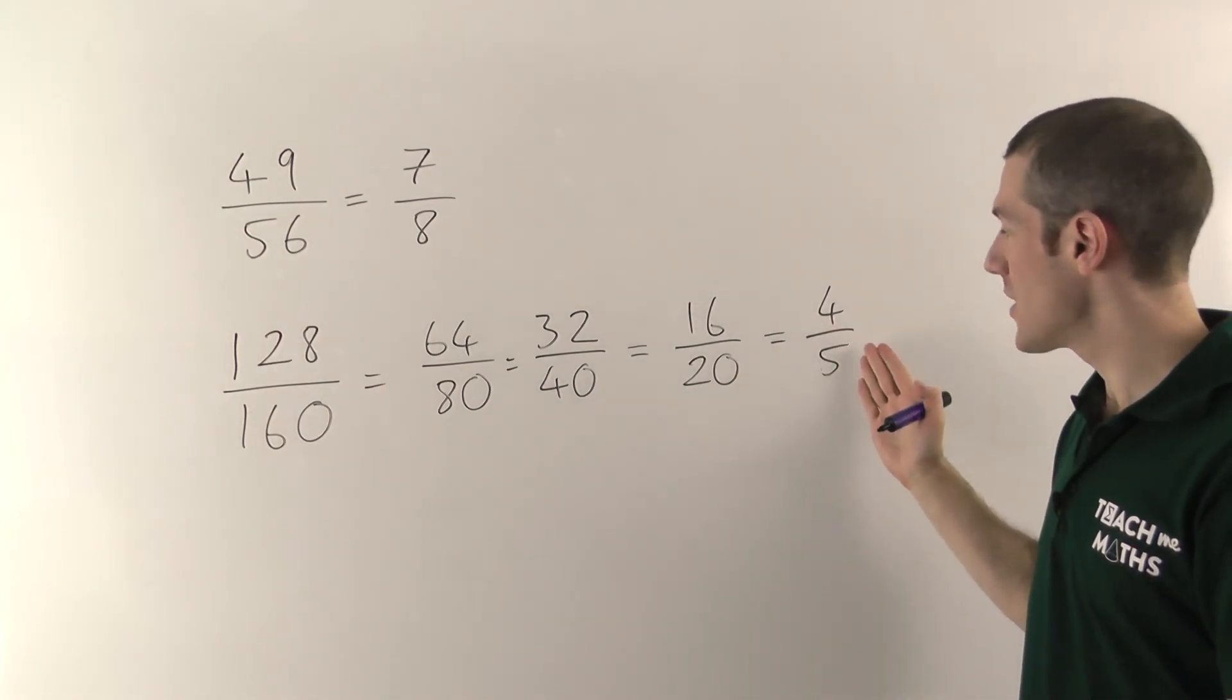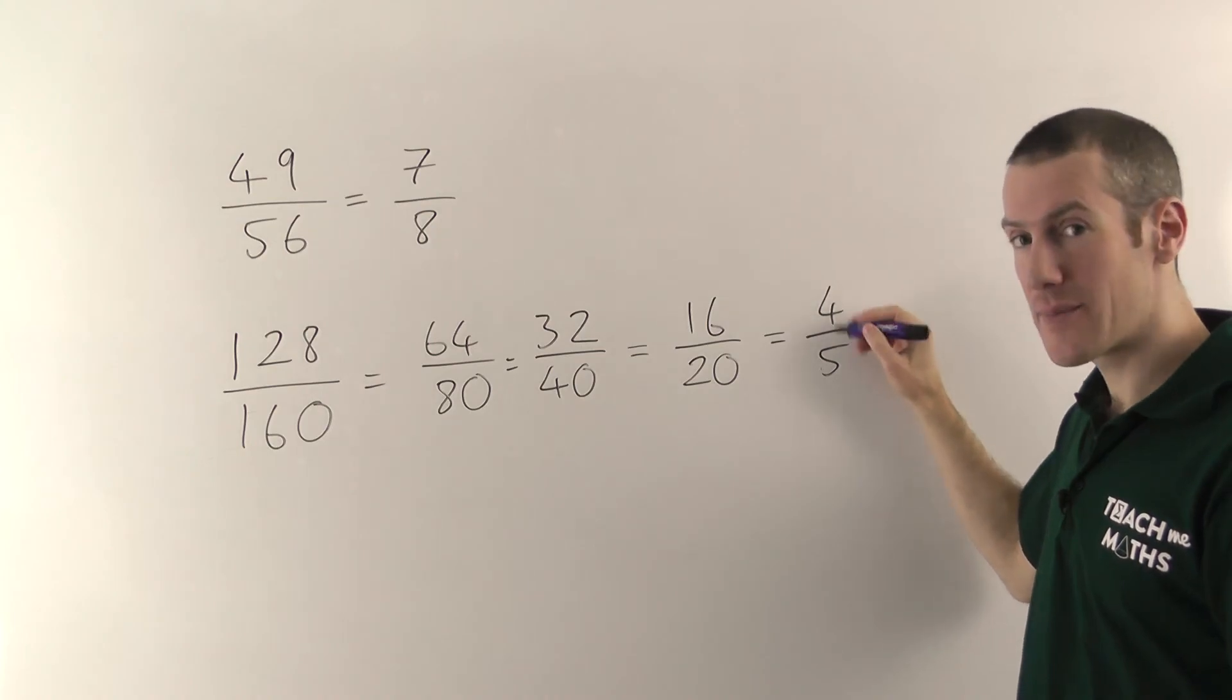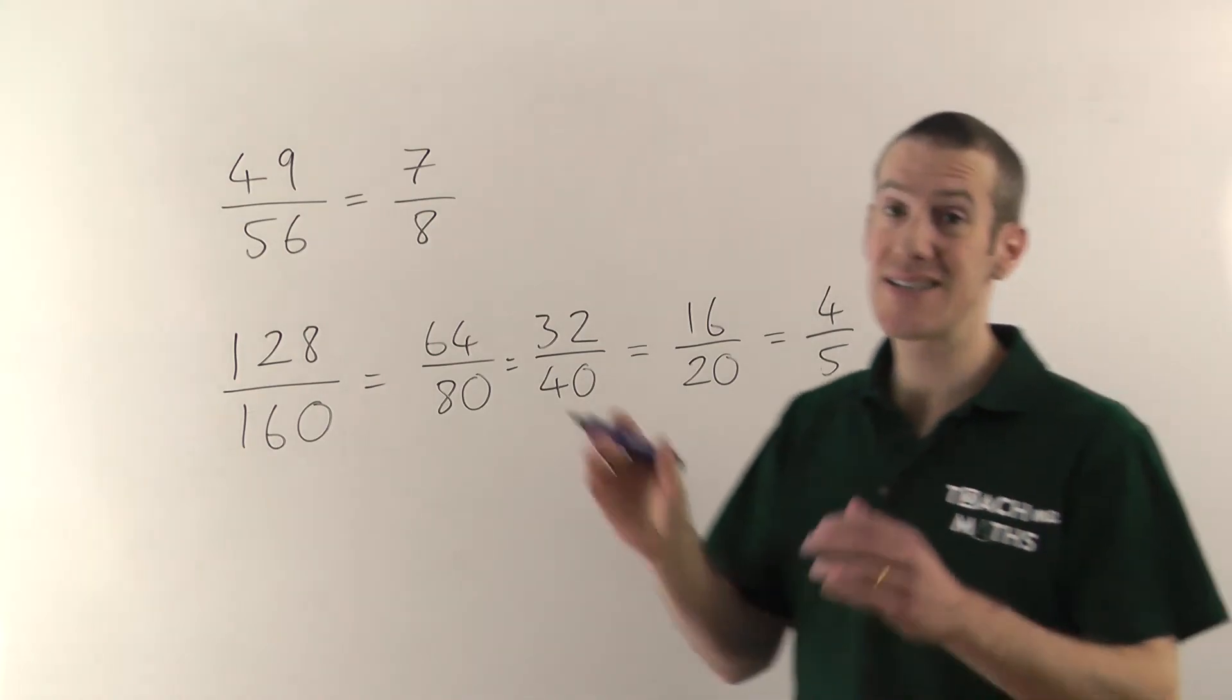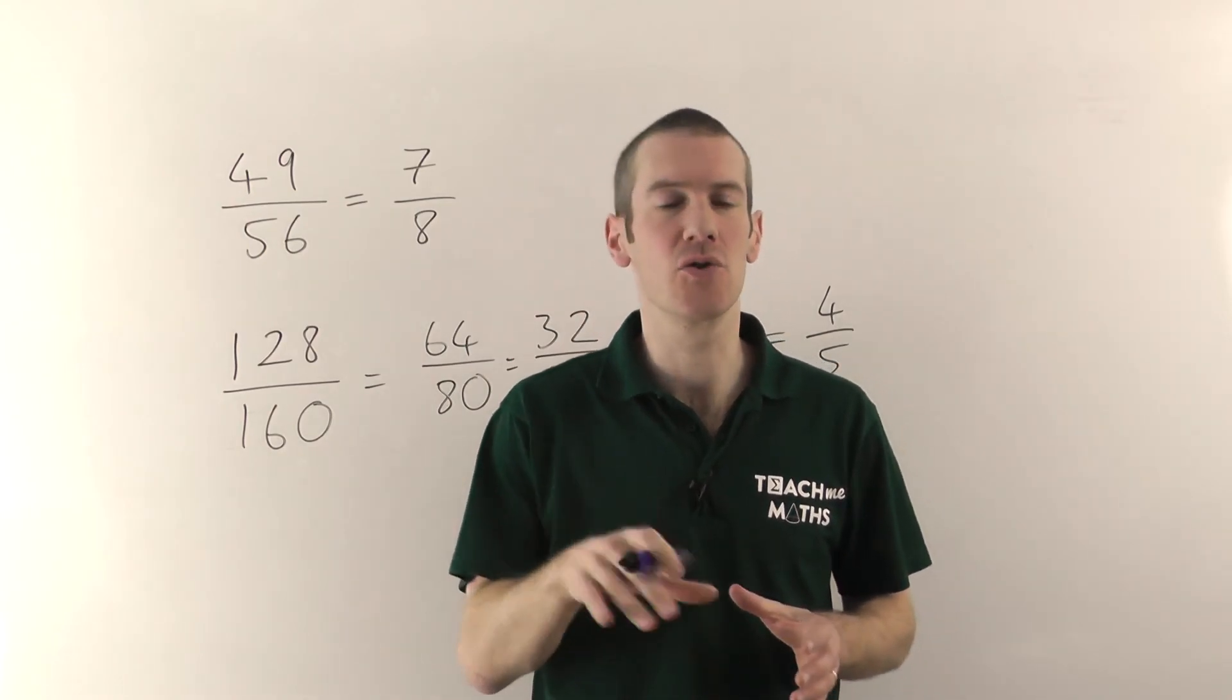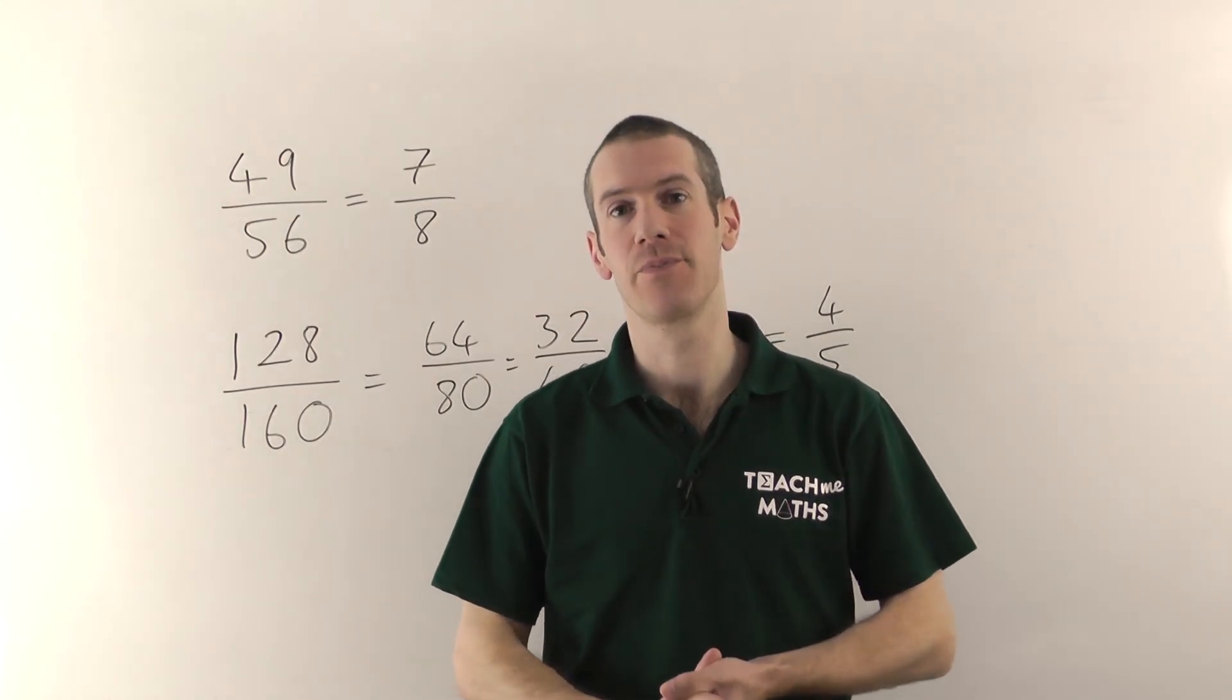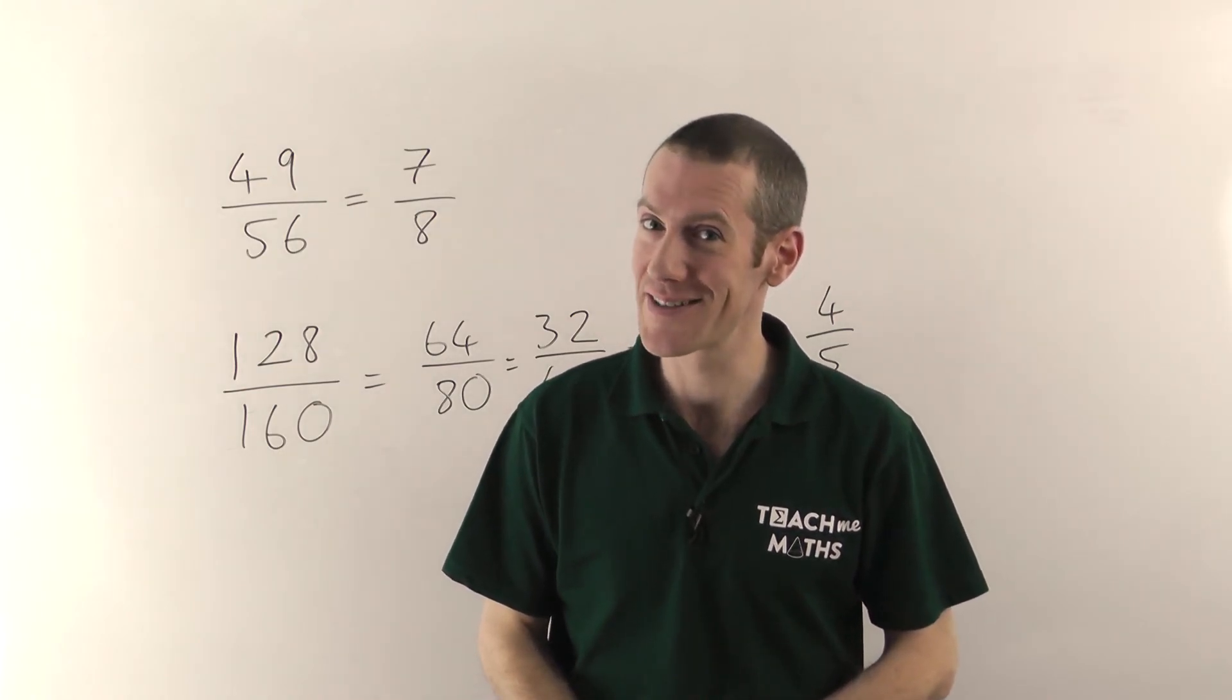But you must keep going until you can't divide by anything else. Always check. Make sure nothing else goes into there. So that's simplifying fractions. Always divide them down. Whenever you give a fraction answer, you must always cancel it as much as possible. My name's Jonathan Hicks, and you're watching Teach Me Maths.